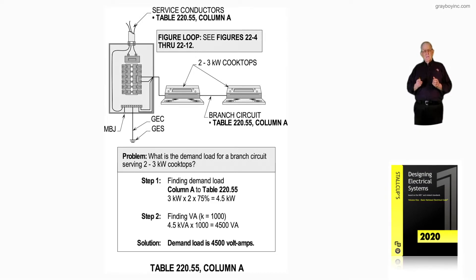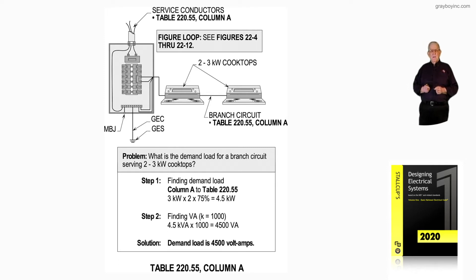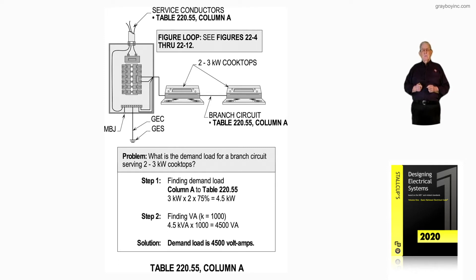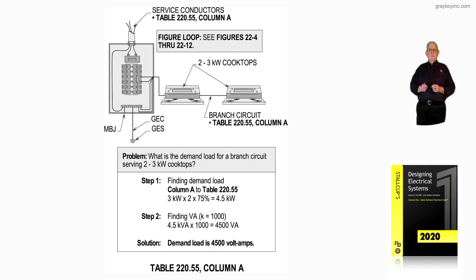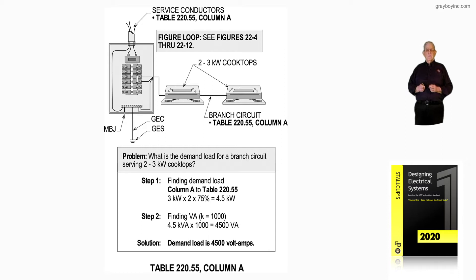This illustration deals with cooking equipment, and we're using Table 220.55, Column A, to determine the procedure for determining the VA — the solution that you see in the boxed-in information.